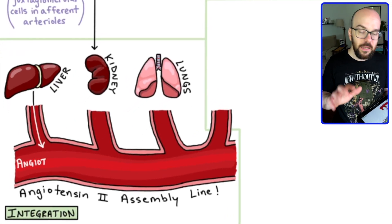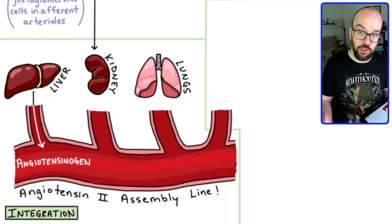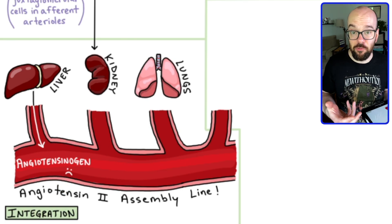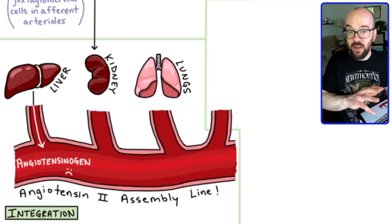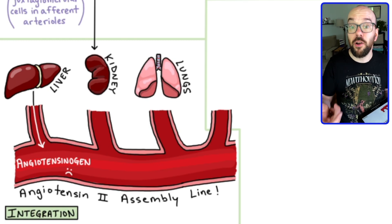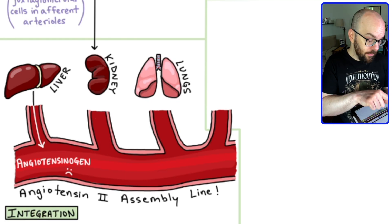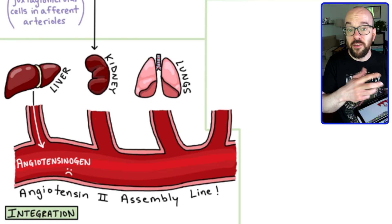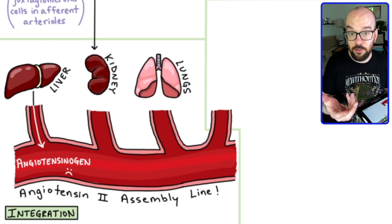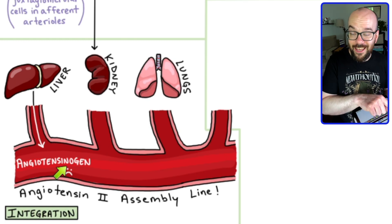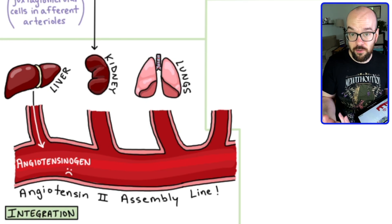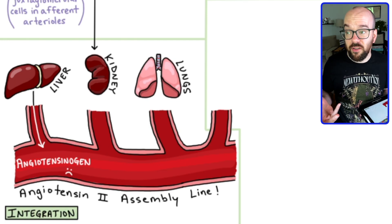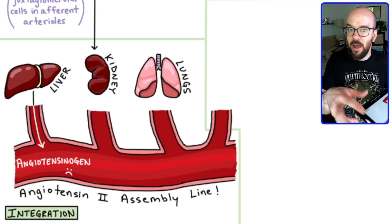The liver is going to produce something called angiotensinogen. Angiotensinogen is an inactive hormone — it doesn't do much on its own, but we need it present because we're about to convert it into an active form. Breaking down the name: angio refers to blood vessels, tense refers to tension or pressure, and the gen at the end indicates something inactive that will become active soon. The liver just continuously produces this, so we always have some ready to go.